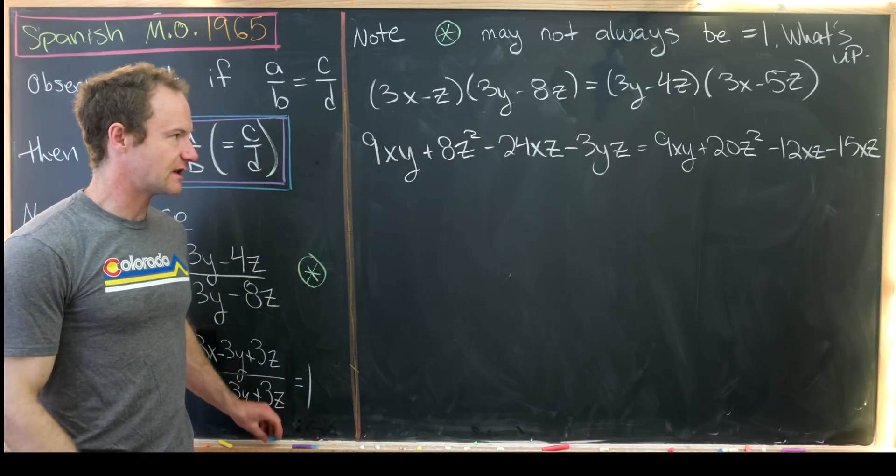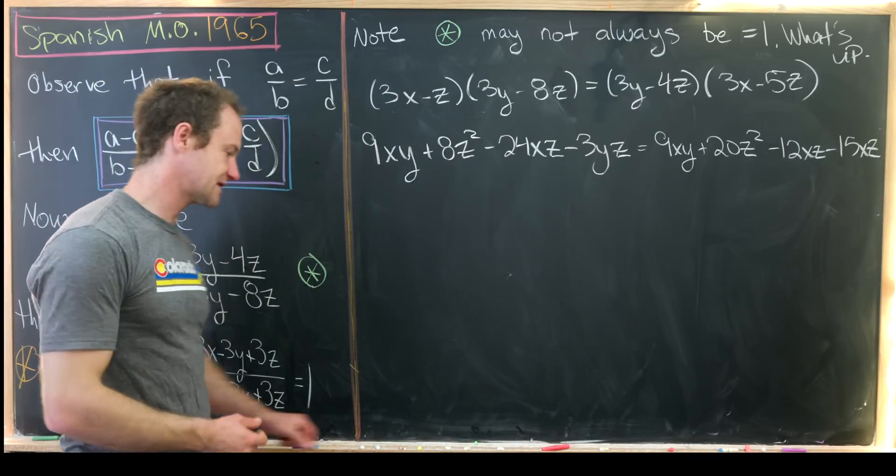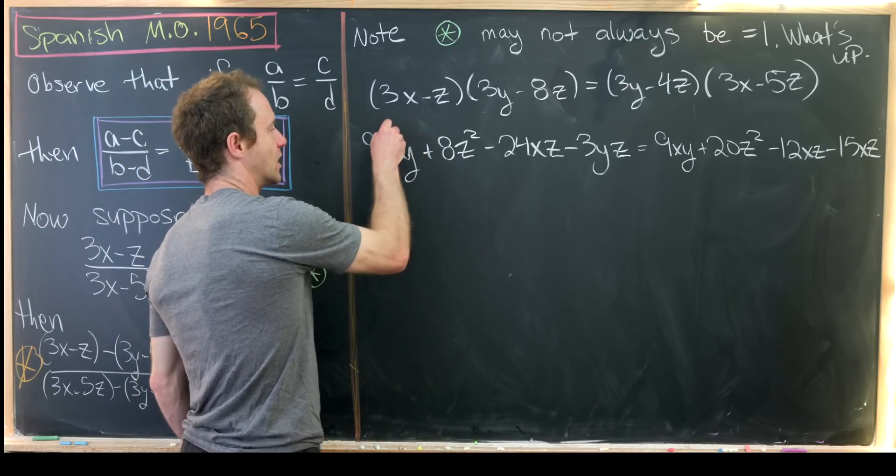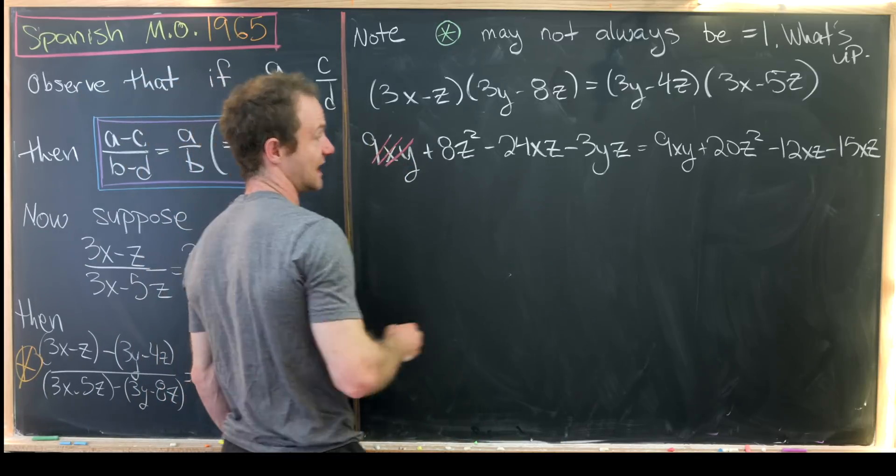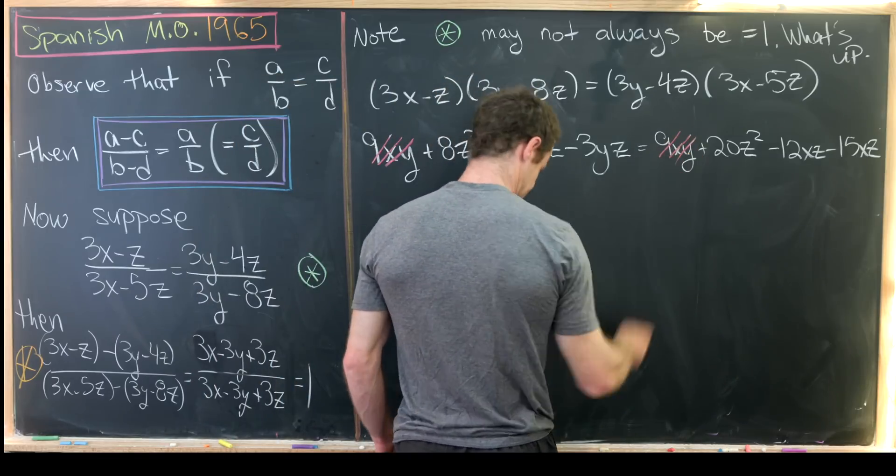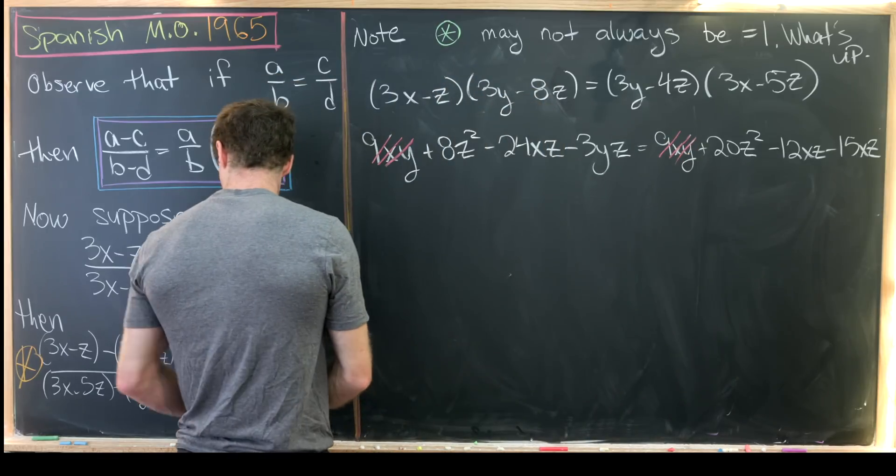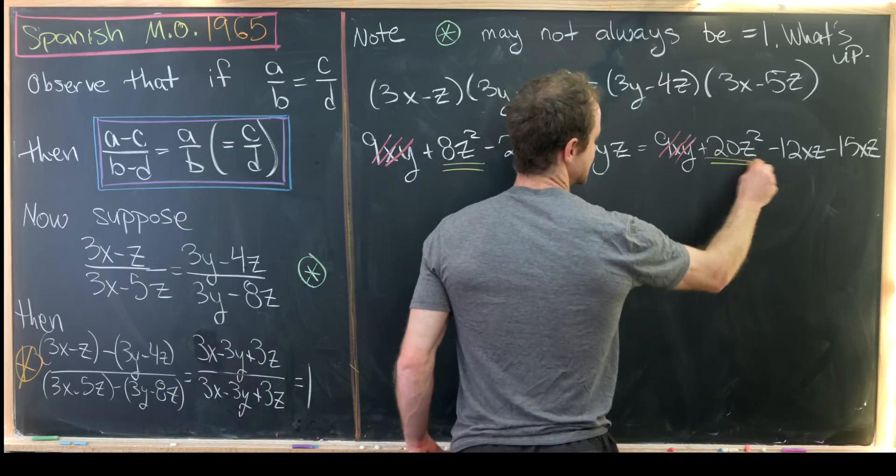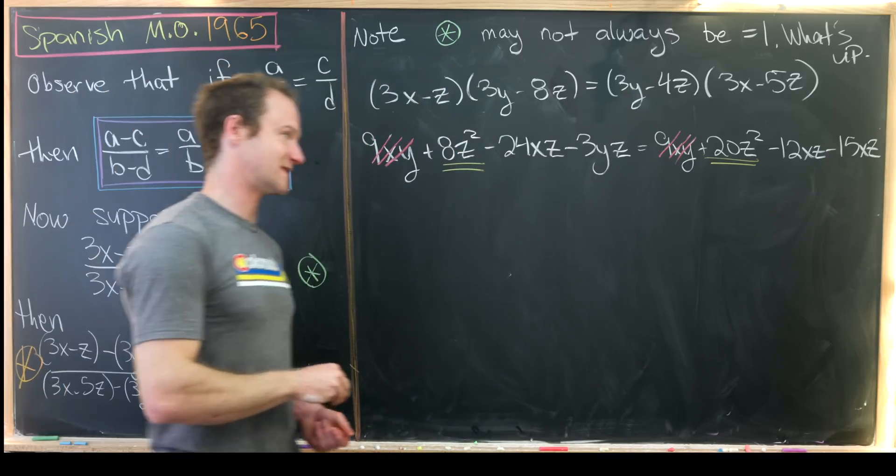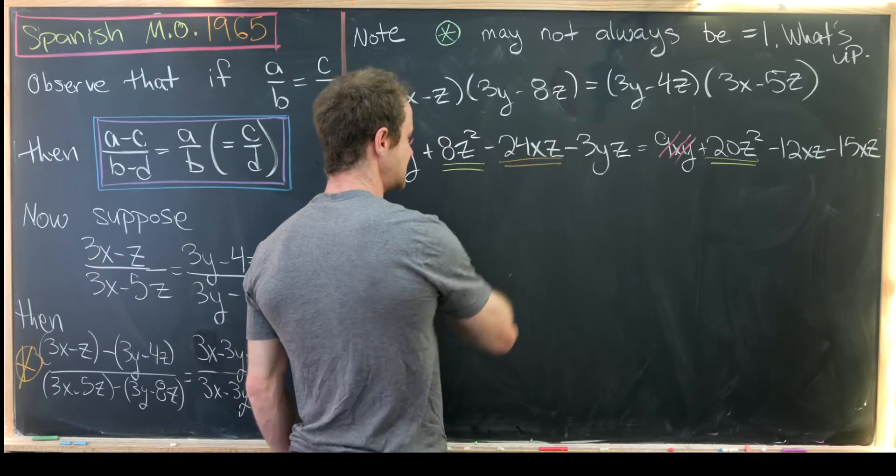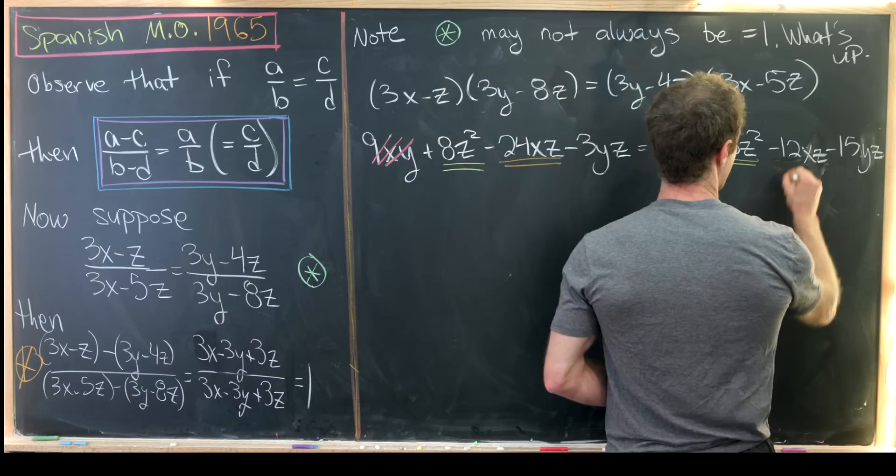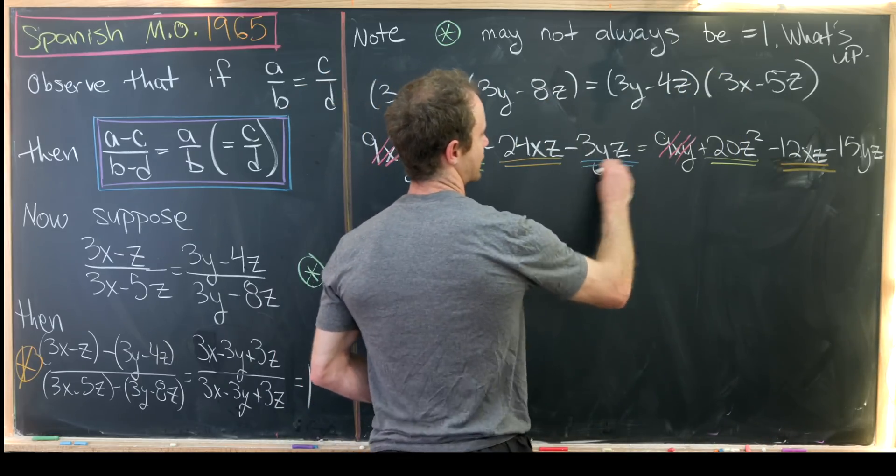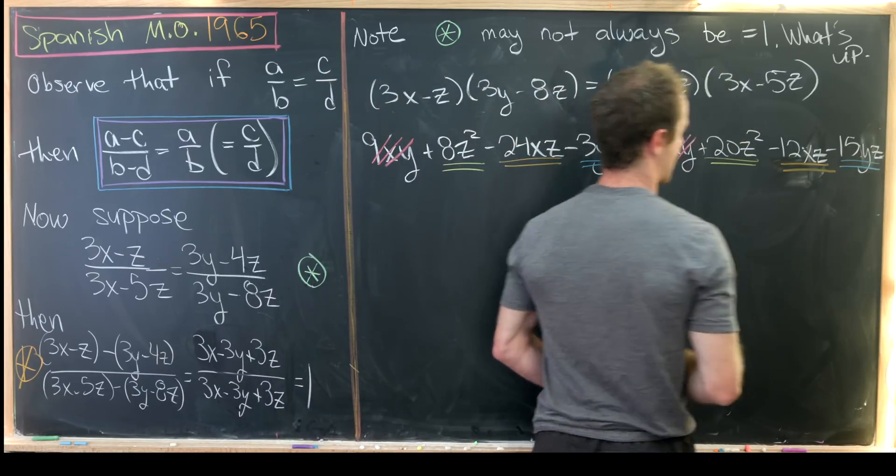So now we'd like to, first of all, cancel everything we can cancel, which is only one term on either side. So this 9xy will cancel with this 9xy. And then from there we can start combining like terms. So this 8z squared can be moved over and combined with the 20z squared, this 24xz with the 12xz, and then finally this 3yz and this 15yz.